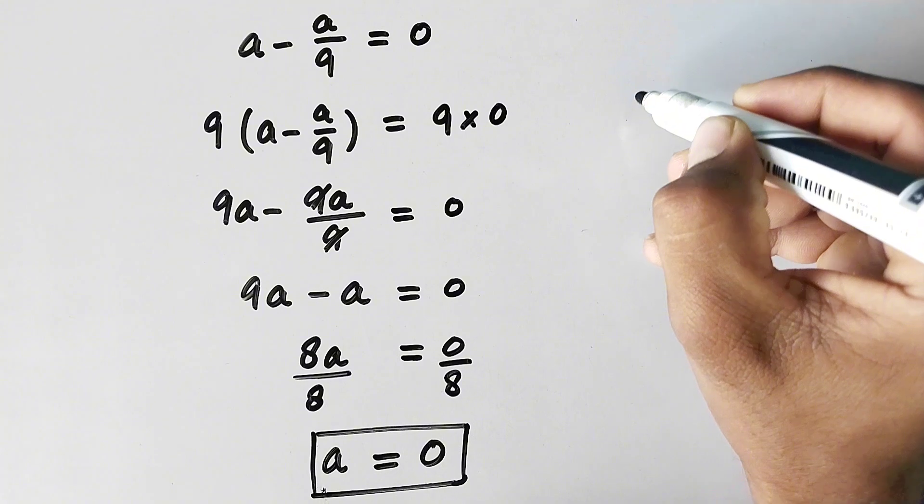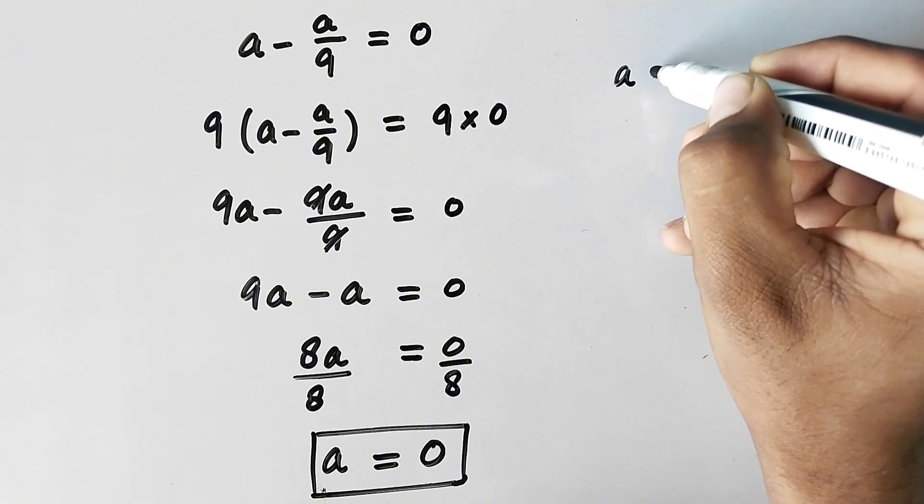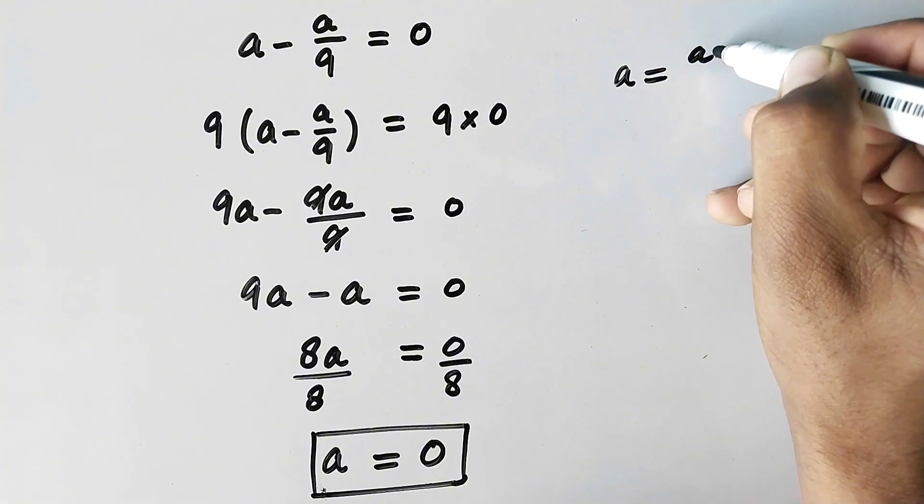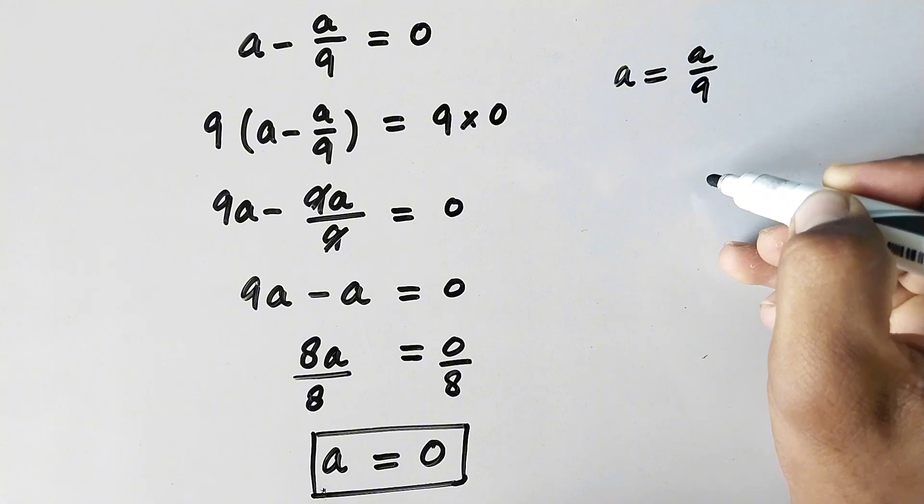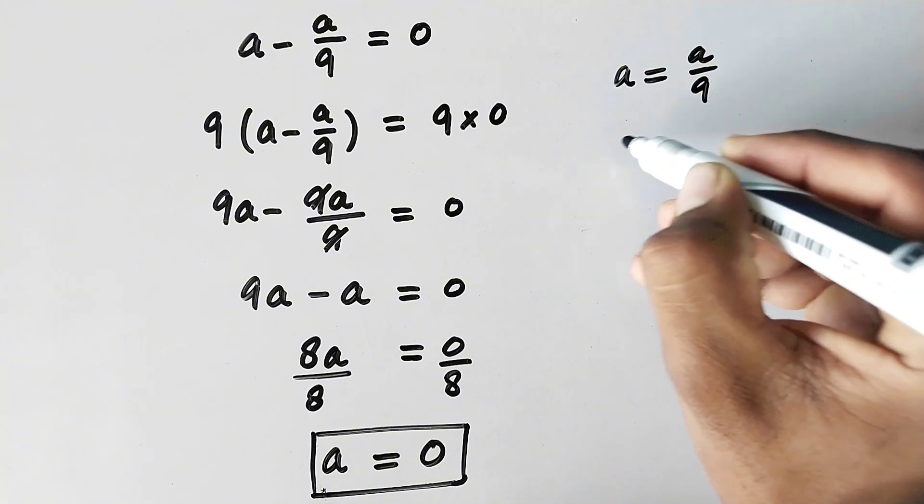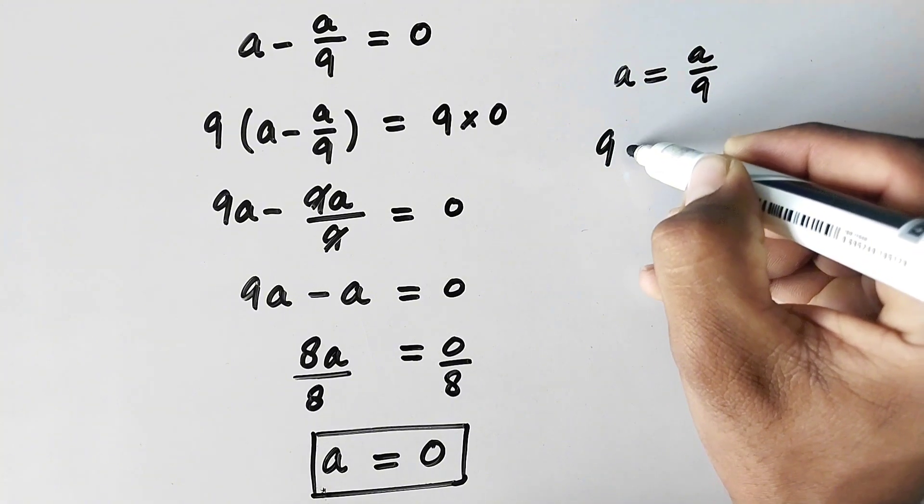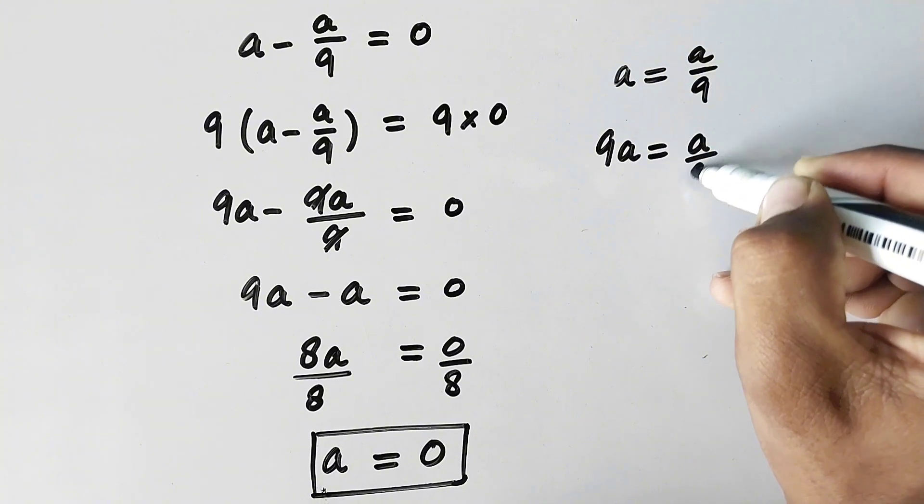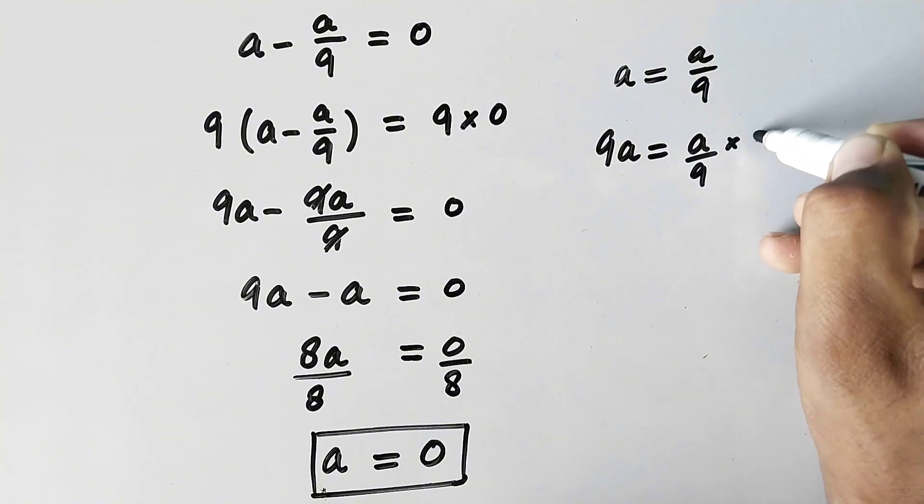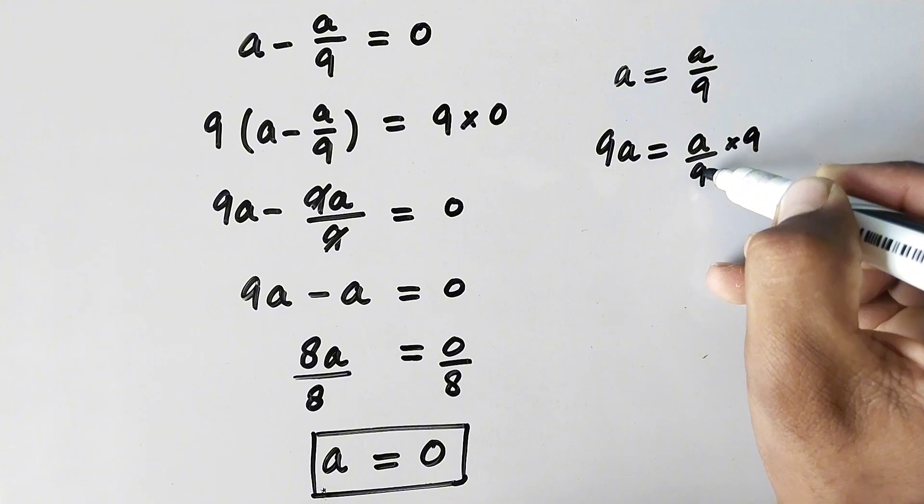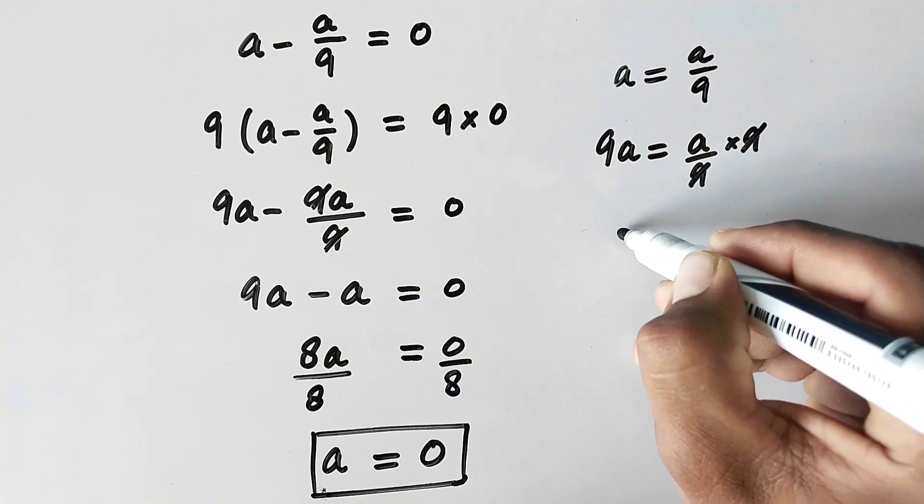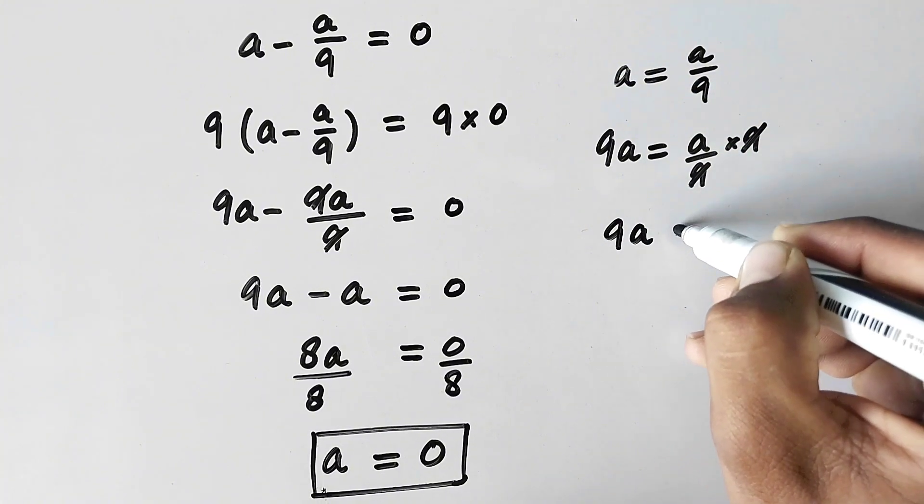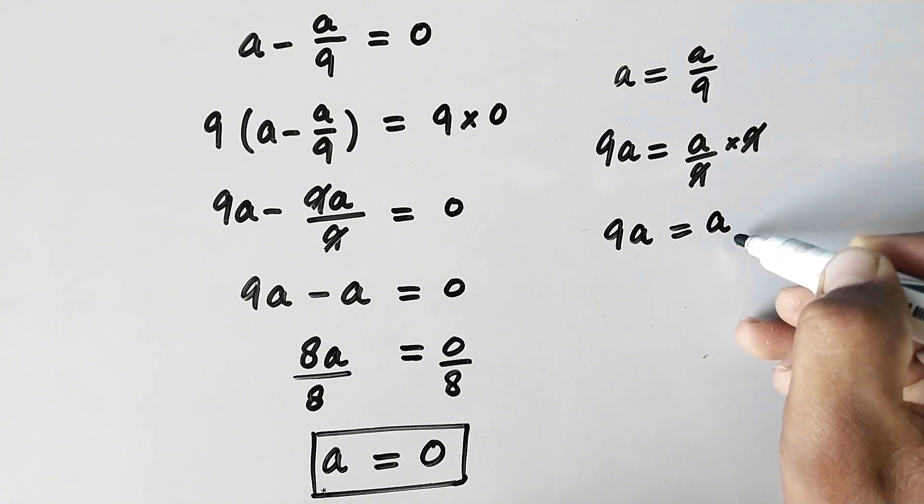That is the value of a. Or we can solve it in this way: a is equal to a over 9 and we will multiply both sides by 9. So here will be 9 times a is equal to a over 9. So this 9 will be cancelled by this 9.